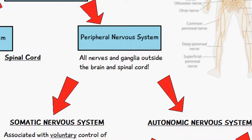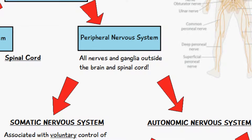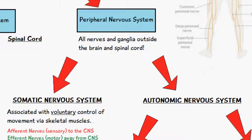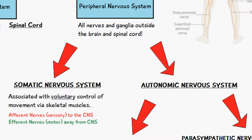So we have the central nervous system, consisting of the brain, the brain stem, and the spinal cord, and the peripheral nervous system, which is all the other nerves which are outside of the brain and spinal cord. We can further divide the peripheral nervous system into the somatic nervous system and the autonomic nervous system.